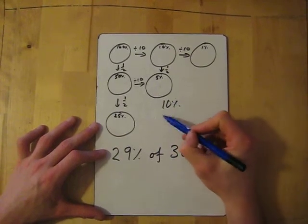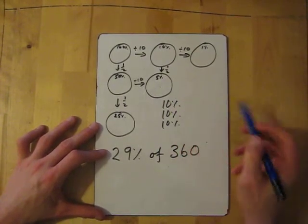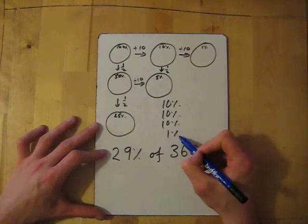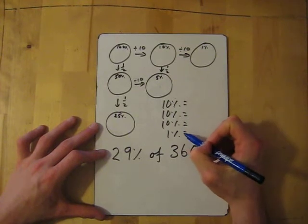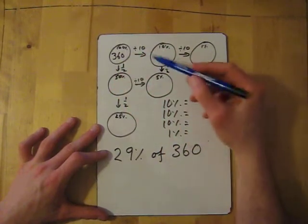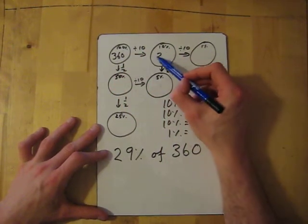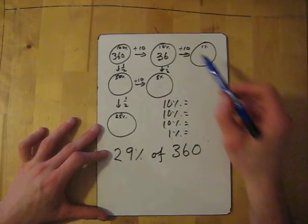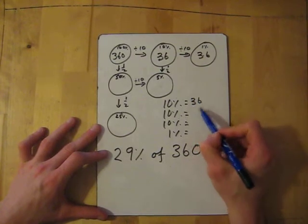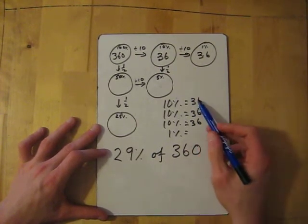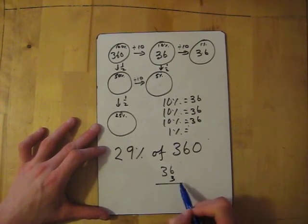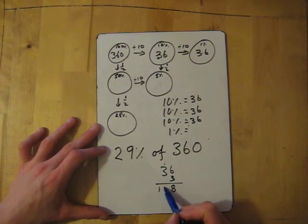I need 30%, so I need three 10%s and then a 1%. My 100% is 360. I need the 10%, so divide by 10 which is 36, and I also need 1%, so divide that again which gives me 3.6. So the 10% is 36, 36, 36.